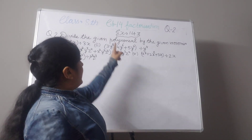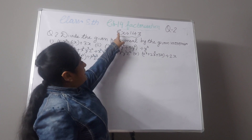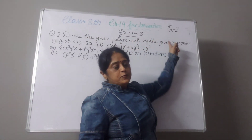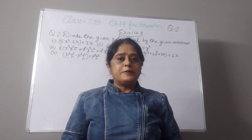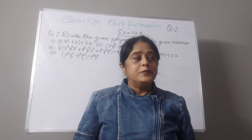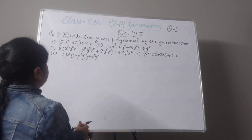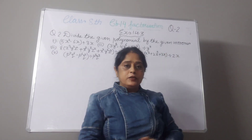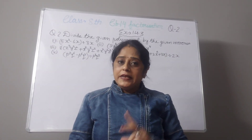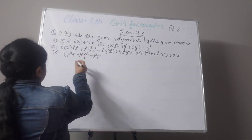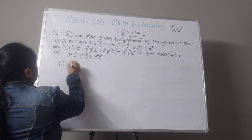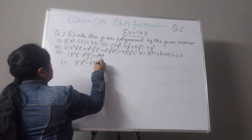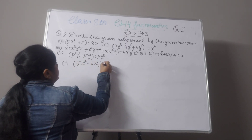Today I will explain chapter 14, exercise 14.3 for class 8, question number 2. Previously I have explained question number 1, you can check that video. Now in the first part, you have to divide the given polynomial by the given monomial. You know the meaning of monomial — a single term. First we have to divide 5x² minus 6x, and we divide by 3x.